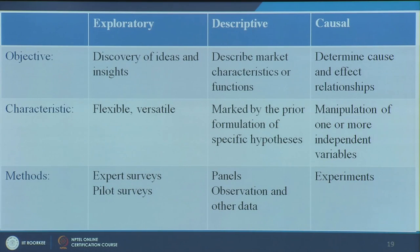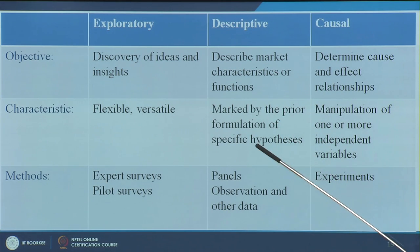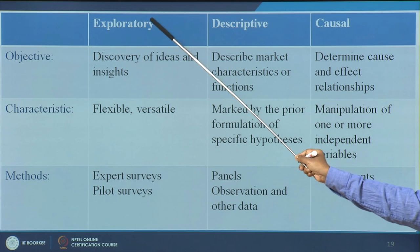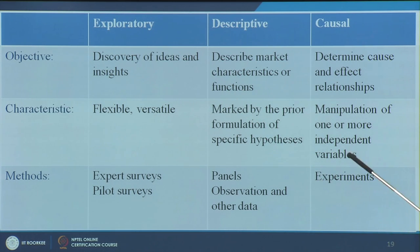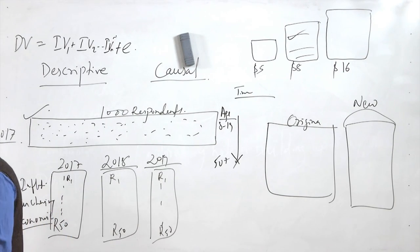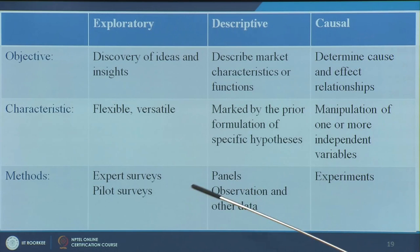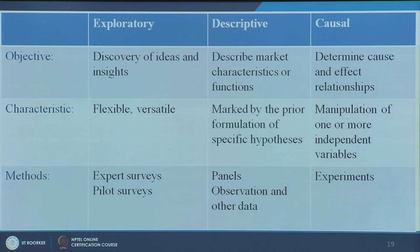A brief comparison of the three research types: the objective of exploratory is discovery of ideas; descriptive is to describe market characteristics; causal is to determine cause and effect. Exploratory is more flexible and versatile. Descriptive is marked by proper prior formulation of hypotheses — exploratory helps build these. Causal involves manipulation of one or more independent variables to observe effects. Methods are: expert surveys and observation for exploratory, primary surveys for descriptive, and experiments for causal.